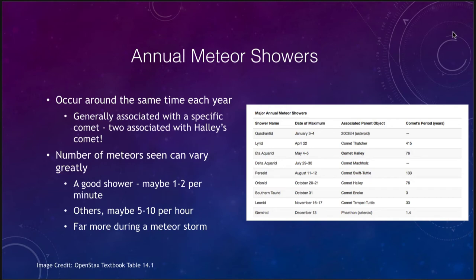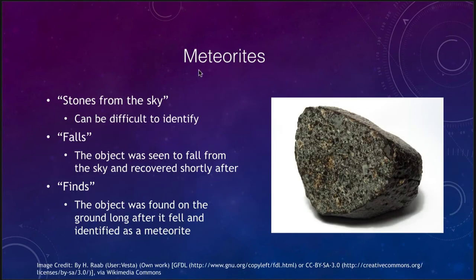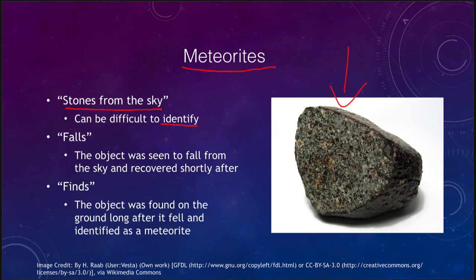Now let's look at the parts that actually make it down to Earth — what we call meteorites. These are pieces we could actually touch: stones from the sky, material that has fallen from space. They can be difficult to identify. You typically need someone experienced with meteorites to determine whether a rock came from space or is just a regular Earth rock. This is especially true once things have sat on the Earth for a while, as old rocky meteorites can be worn down and degraded by weathering and may no longer look any different from a typical Earth rock.